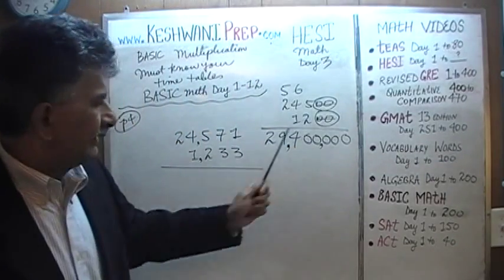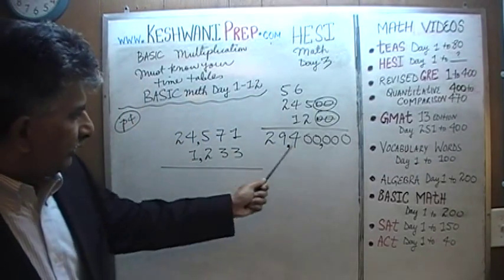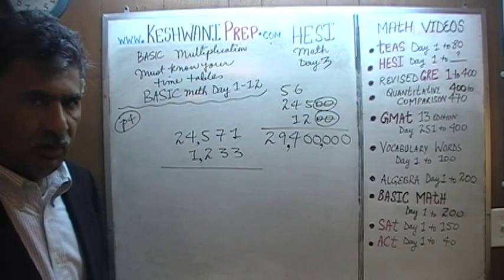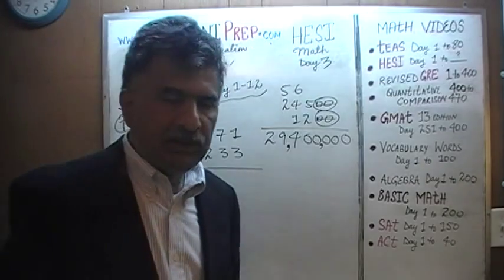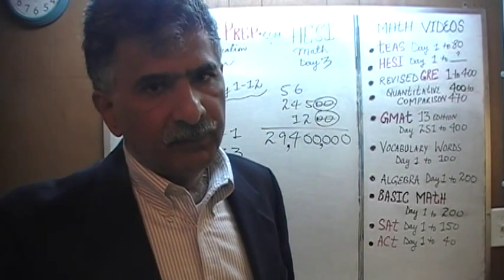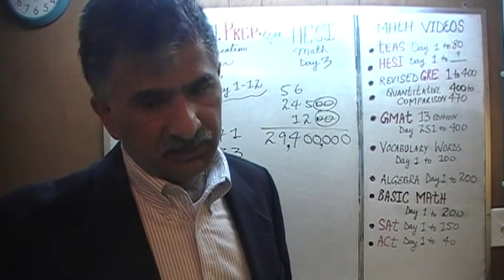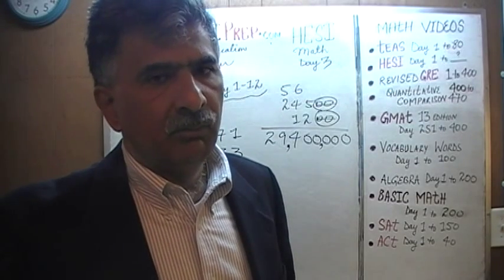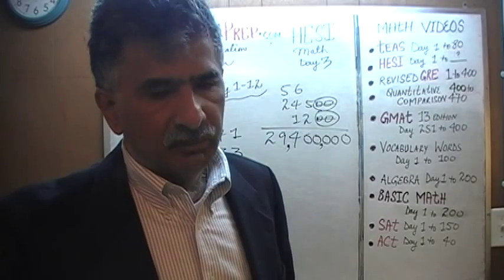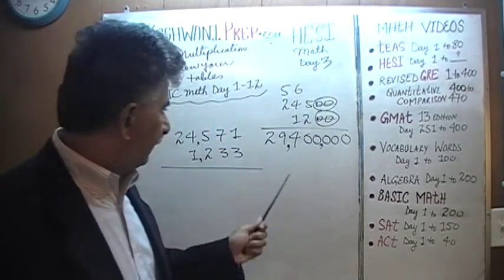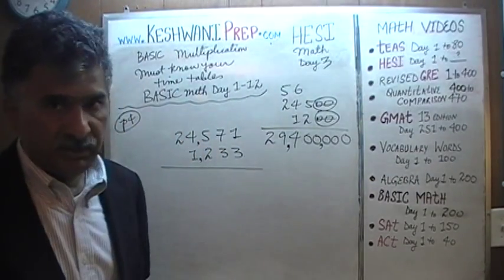Now the question is: what is that number that you see there? You must know how to read your millions, billions, and trillions. This result is 29,400,000.